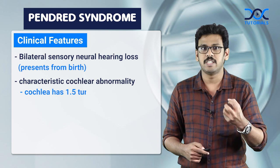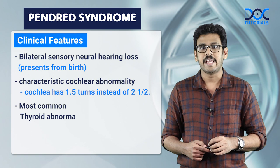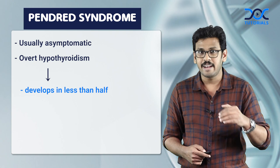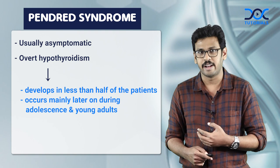The most common thyroid abnormality is goiter without hypothyroidism, and the patient with Pendred syndrome is usually asymptomatic. Overt hypothyroidism develops in less than half of patients, and it occurs mainly later during adolescence and young adulthood.